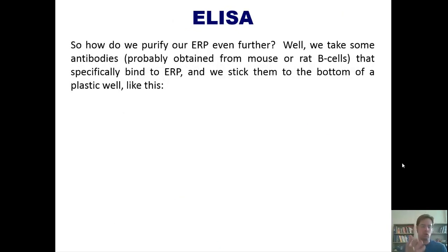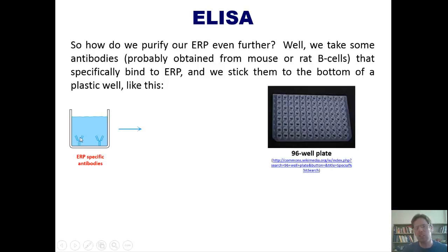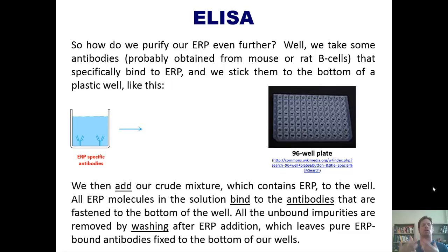So, how do we purify, then, this crude mixture of ERP that we know has ERP because we've seen a peak on our carbon-13 NMR? Well, what we do is we take some antibodies, probably obtained from a mouse or a rat's B cells, that specifically bind to ERP, and we then stick those antibodies to the bottom of a plastic well like this. Now, the plastic well, by the way, is usually found in a 96 well plate, for which I've got a picture shown right here. So, I have a bunch of these wells coated at the bottom with antibodies that are specific to ERP. That is, they're antibodies that bind to ERP and stick to it. What happens now is I take my crude mixture, my one in my test tube that I know has ERP, along with a bunch of other impurities, and I pour it into this well. In other words, we add our crude mixture, which contains our ERP and all of this other junk, into this well, as I've shown right here.